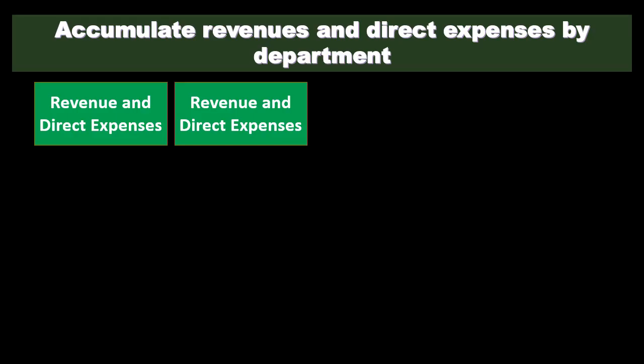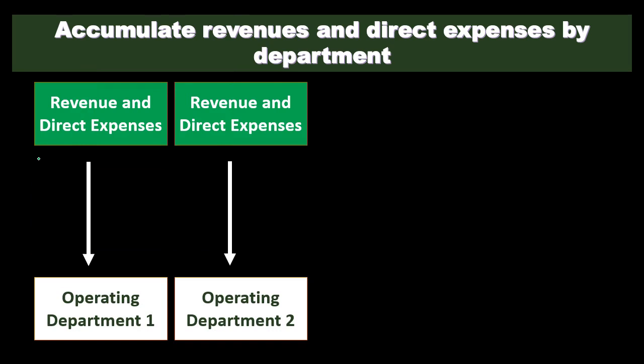Let's look at step one in a bit more detail: accumulate revenue and direct expenses by department. We're going to have the revenue and direct expenses and apply them directly to the department. In our example, we're going to say that we have two operating departments — departments that generate revenue and have costs — so department one and department two.